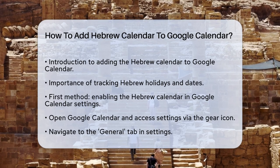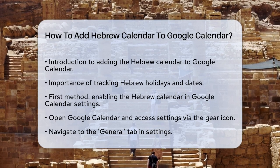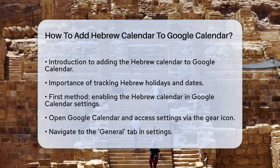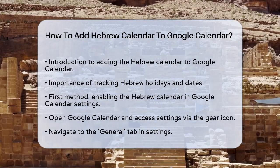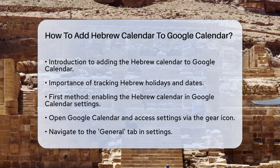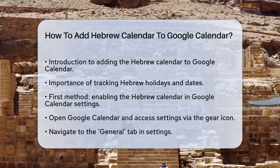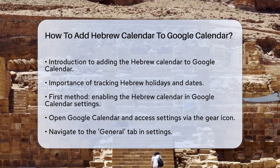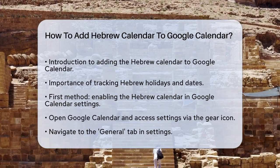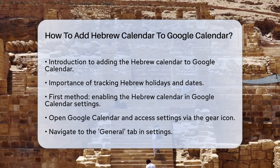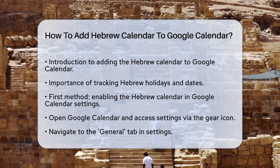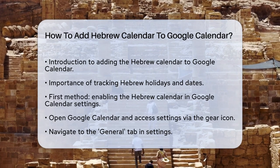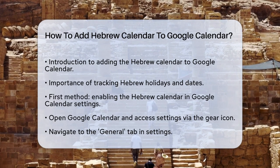First, you have a couple of ways to do this, but we'll start with the simplest method. You can enable the Hebrew calendar directly within Google Calendar settings. To do this, open your Google Calendar and go to the Settings. Click on the Settings icon, usually represented by a gear, and then select Settings from the drop-down menu.